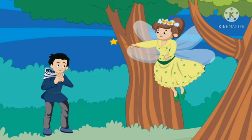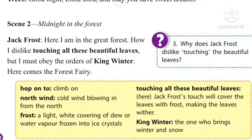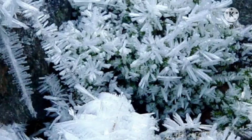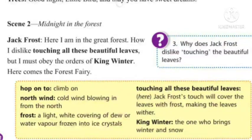Jack Frost has appeared in the scene to cover all the leaves with frost and make them dry — that is his duty. Jack Frost has come to obey the orders of King Winter, who is the one who brings the winter season. But Jack Frost didn't like touching all these beautiful leaves, because his touch would cover the leaves with frost — those tiny ice crystals — making the leaves wither. Wither means dry. So when he touched all the leaves in the forest, they would be covered with frost and become dry.